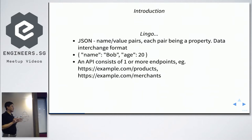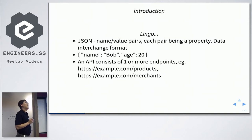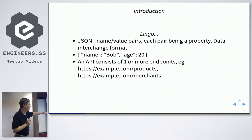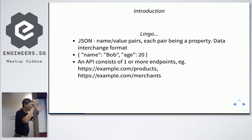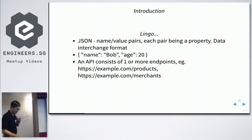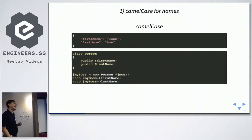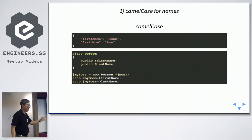An API consists of one or more endpoints. For example, let's say NTUC has a REST API — they have a product endpoint and a merchant endpoint. I want to clarify: some people call these 'product API' and 'merchant API', which is wrong. Your company has one API but it has many endpoints. I have eight points about designing API responses to make them developer-friendly, so everyone's life will be easier.